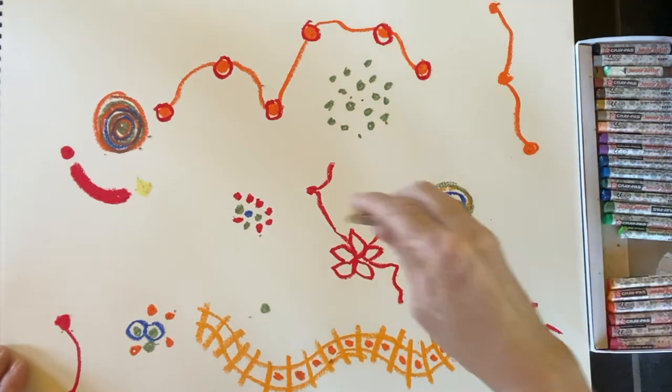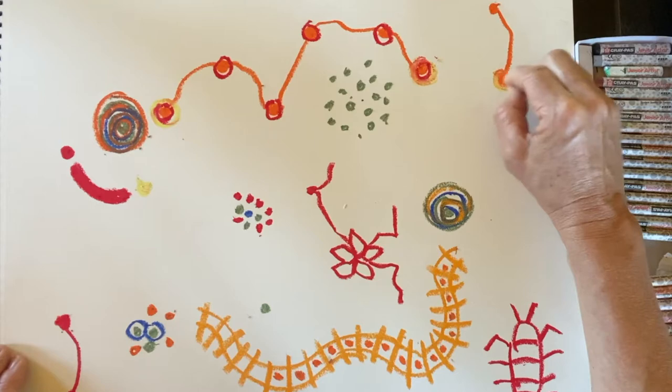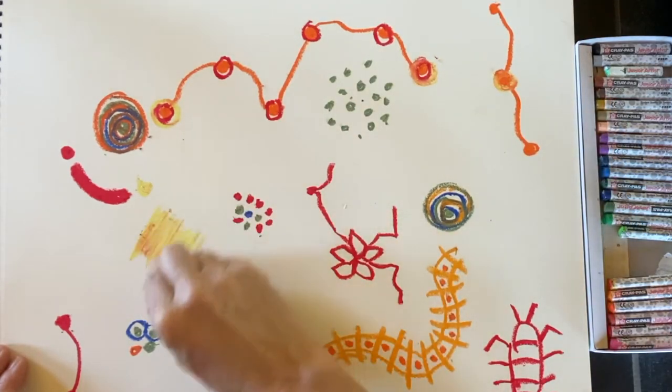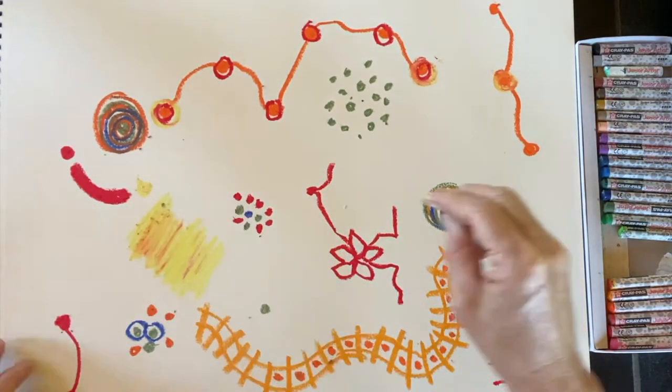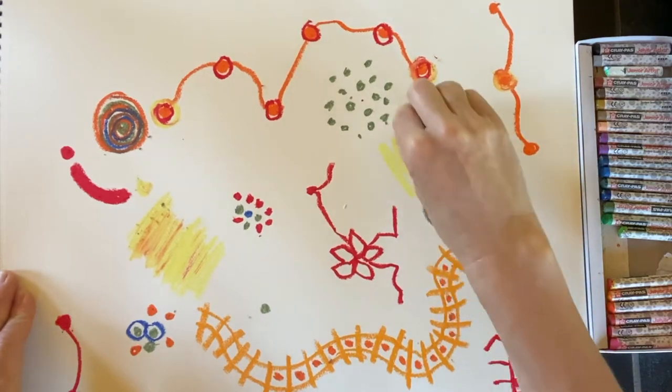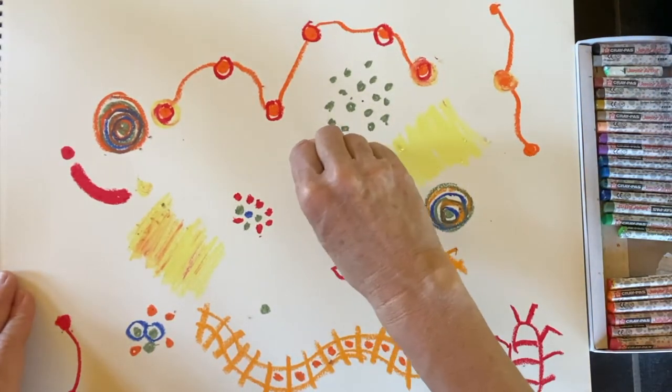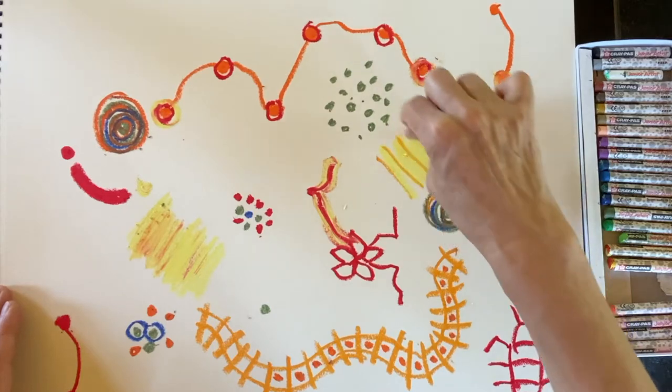I've got some yellow. And each time I pick up a color, I probably want to make some new shapes like this. But I also want to use that color that I've chosen to interact with the lines and shapes that I already have on the page.